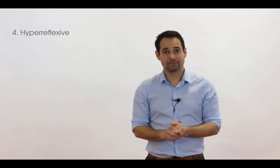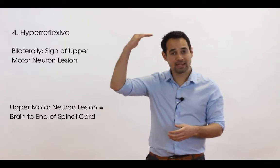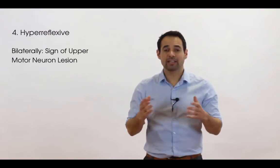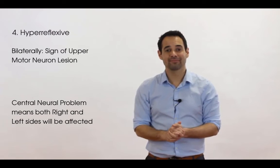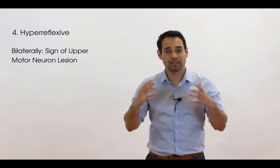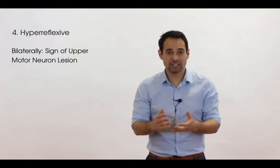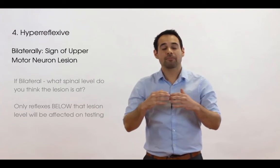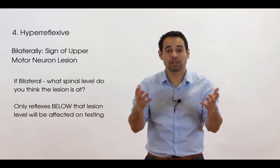Now, onto a hyperreflexive or exaggerated response. If this is elicited bilaterally, it is a sign of an upper motor neuron lesion — i.e. a lesion anywhere along the pathway from the brain down to the bottom of the spinal cord. An upper motor neuron lesion is a central issue, which is why both right- and left-sided reflexes will be affected. If the lesion is below the spinal level affecting the upper limbs — for example, a central spinal tumour at L1 — then hyperreflexive changes will likely occur only in the lower limbs, because everything above L1 is still functioning well, while pathways at or below L1 are dysfunctional.